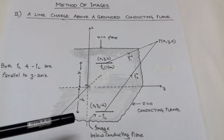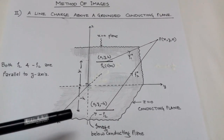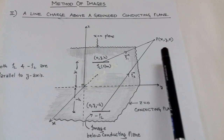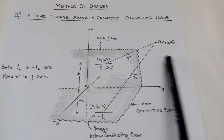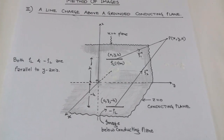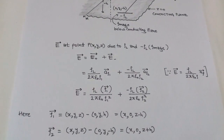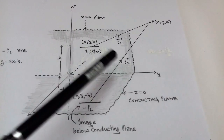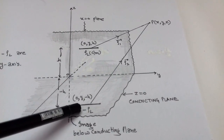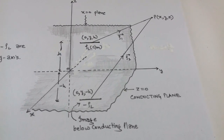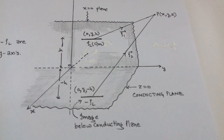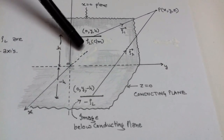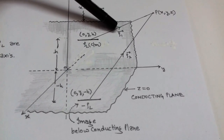This is the charge configuration obtained with the help of the method of images. Our task is now to determine the electric field at point P. Point P has a distance vector rho_1 with respect to rho_l and distance vector rho_2 with respect to minus rho_l. Note that rho_l is a line charge density while rho is a distance vector.